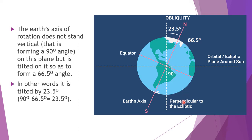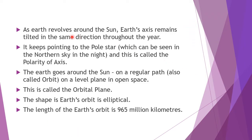As the earth revolves around the sun, the earth's axis remains tilted in the same direction throughout the year. While the earth is rotating or revolving, the axis stays in the same position — both rotation and revolution go on the same way without changing position. The axis points to the pole star, which can be seen in the northern sky at night. This is called the polarity of axis.